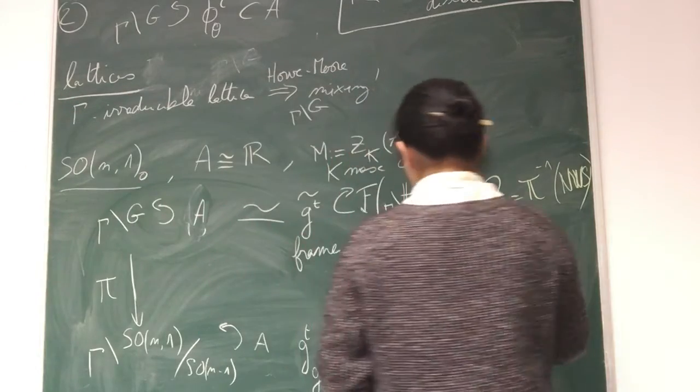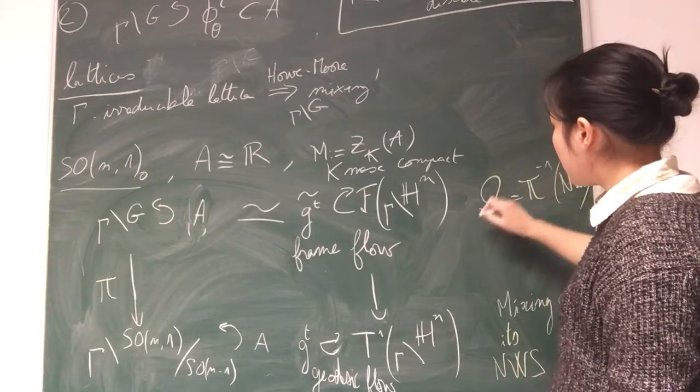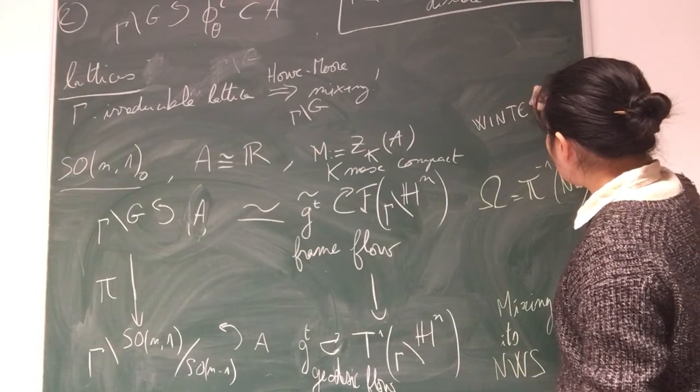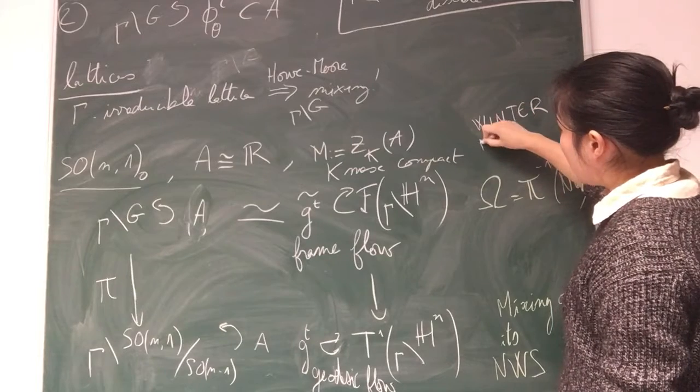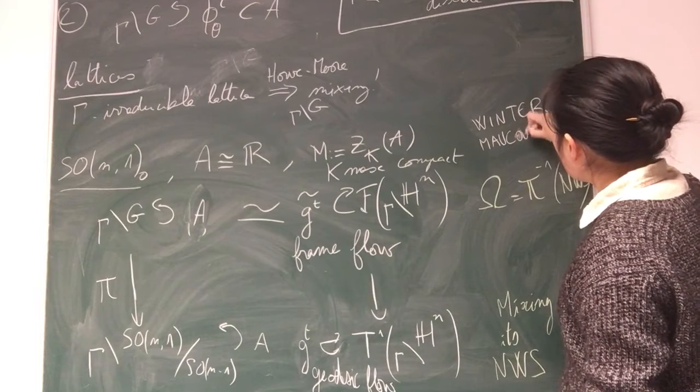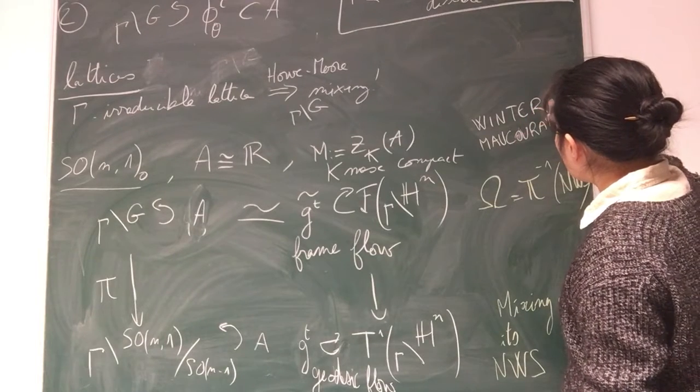And here, for the convex co-compact case, it's a result of Winter. Otherwise, if it's Zariski dense, it's also a result of Winter.